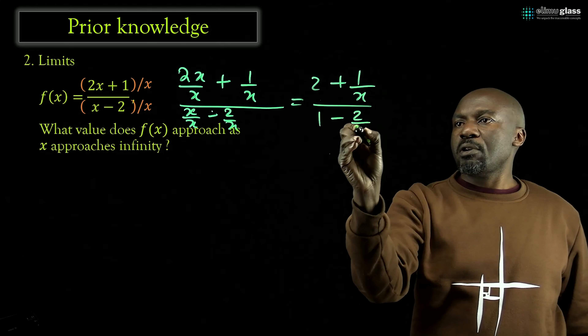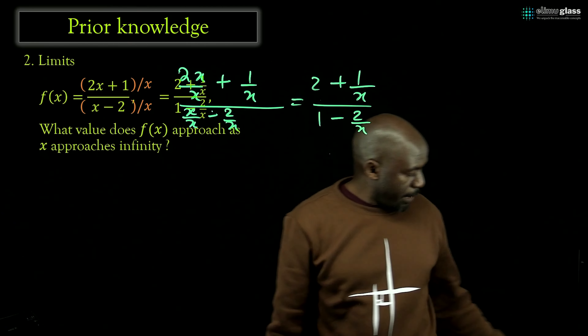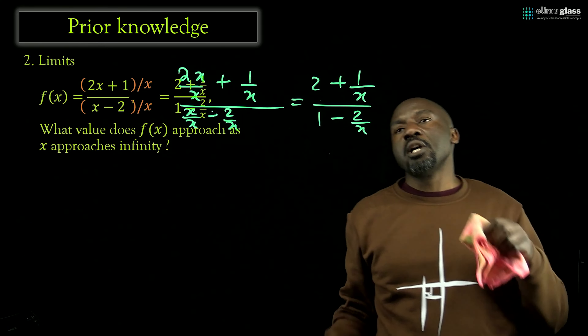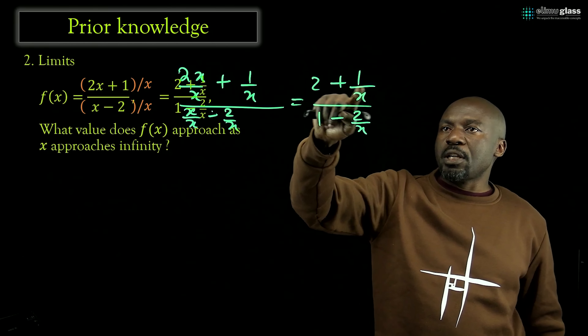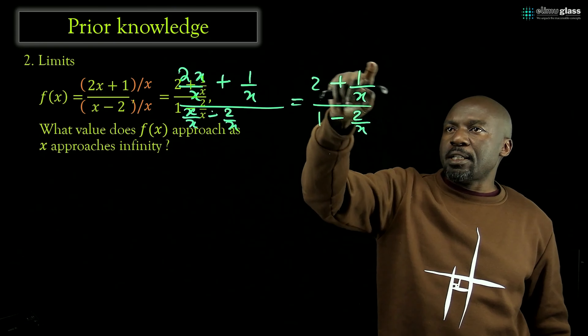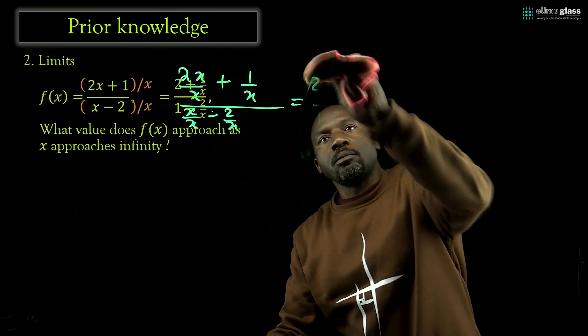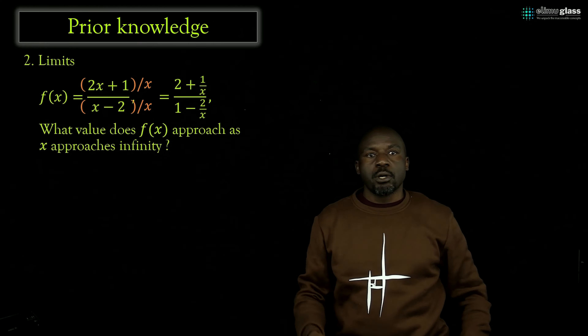So if we divide the numerator by x and the denominator by x, the numerator becomes 2x over x plus 1 over x, and the denominator becomes x over x minus 2 over x. Well, 2x over x is just 2, so we'll have 2 plus 1 over x in the numerator, and 1 minus 2 over x in the denominator. The important part to remember is that 1 over x is a reciprocal function. As x becomes larger and larger, 1 over a large number tends to 0.